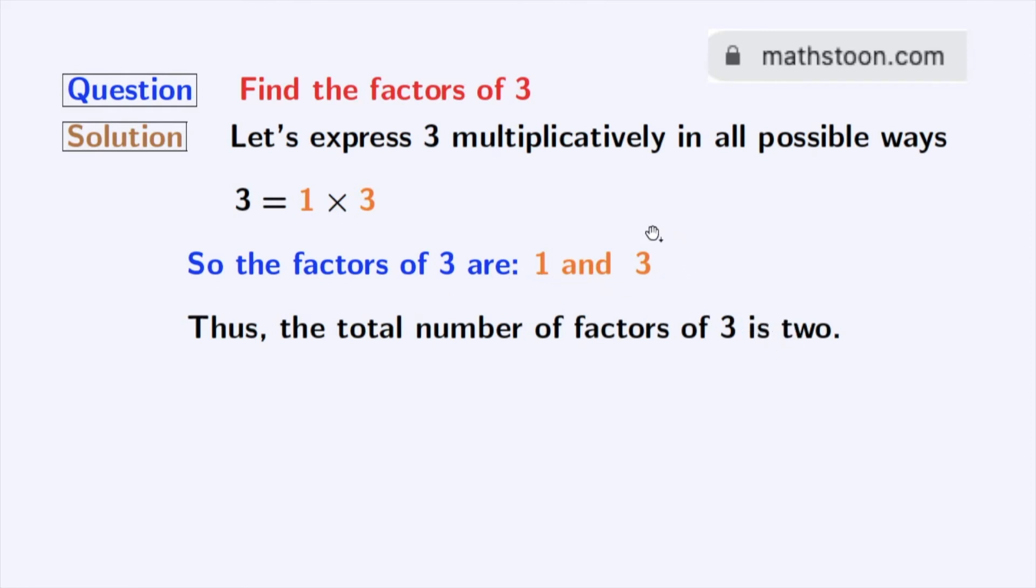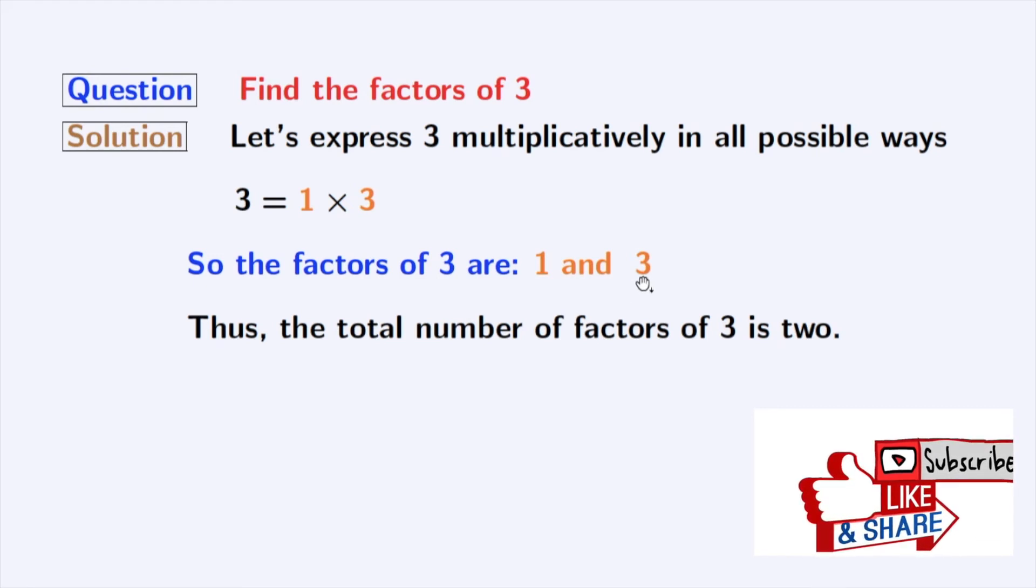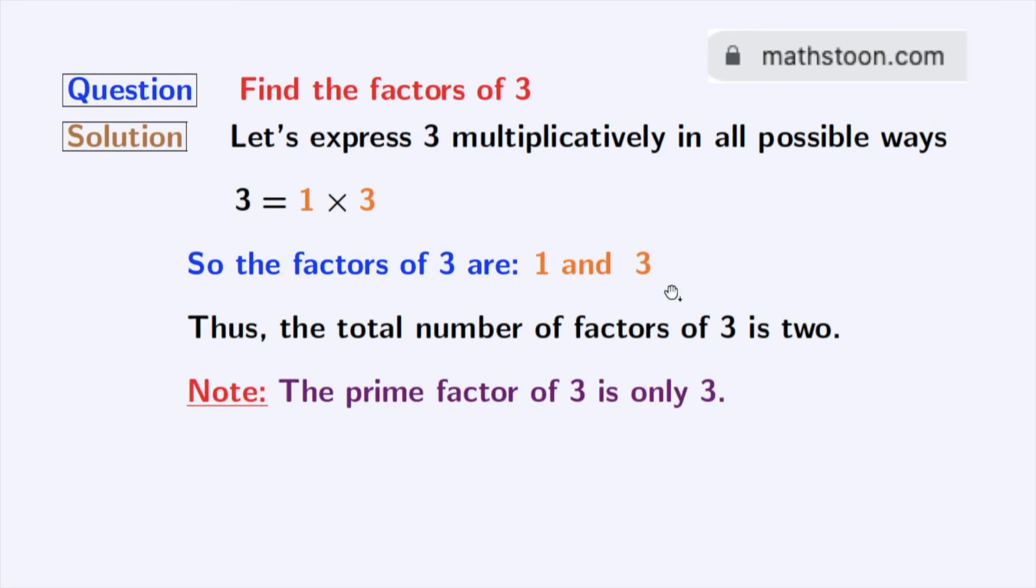Now, if we look at these factors, we can see that 3 here is a prime number because 3 has the divisors 1 and 3 itself. So we can say that the prime factor of 3 is only 3.